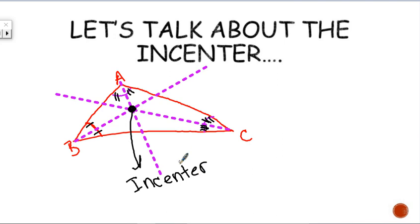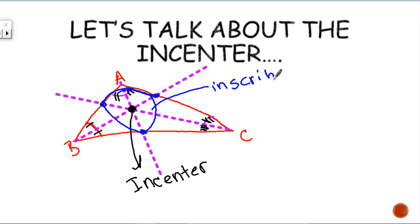The incenter is created by angle bisectors. There is a circle that is going to be inscribed inside of this triangle. If I put a point on each side, the inscribed circle will touch the triangle at those points. That is called an inscribed circle — the circle is inside the triangle, and the incenter is the center of that inscribed circle.